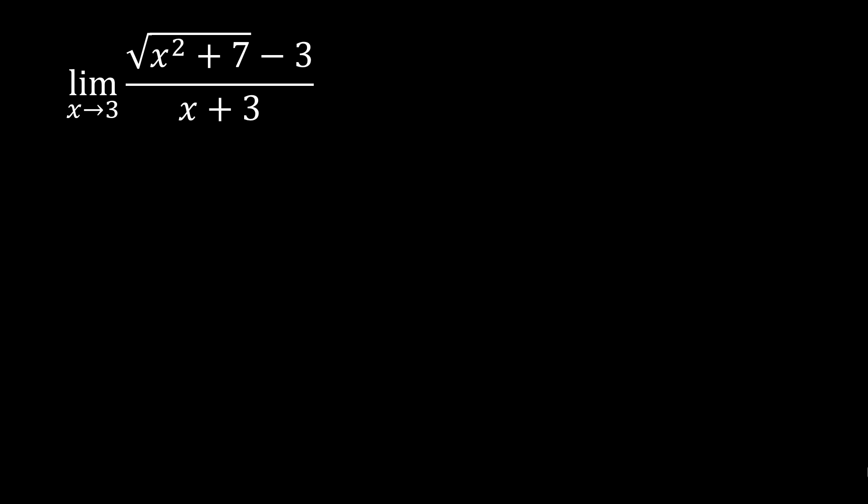We have the limit of the square root of x squared plus 7, minus 3, over x plus 3, as x approaches 3. Notice that we have a combination of a rational function with a radical expression. We can try to do direct substitution first, making sure we don't get 0/0 — an indeterminate form — because if that is the case, we will need to manipulate the function. Let's try it out.